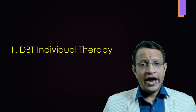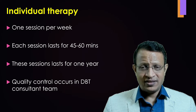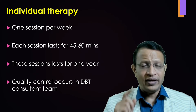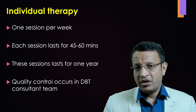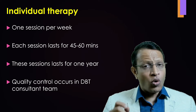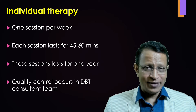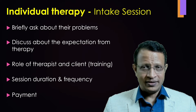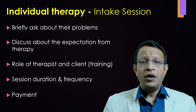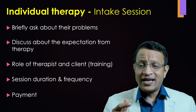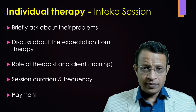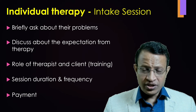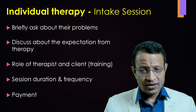Now let us discuss individual therapy. DBT individual therapy means one session per week; each session lasts 45 to 60 minutes, and these sessions last for one year — approximately 48 to 52 sessions. The quality of individual therapy is monitored by the DBT consultation team, and the therapist should also attend the DBT consultation team weekly. There should be an intake session where the client's problems are discussed, expectations are clarified, roles of therapist and client are outlined, and the skills training, session frequency, and payment are discussed.